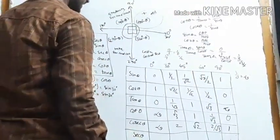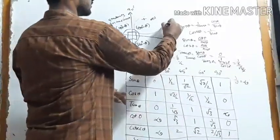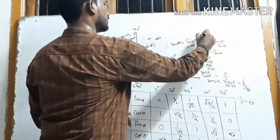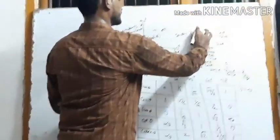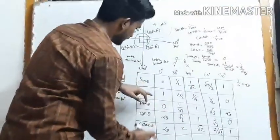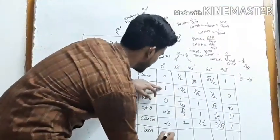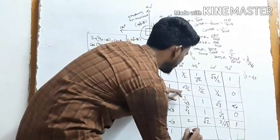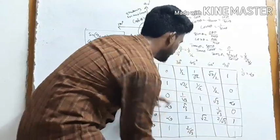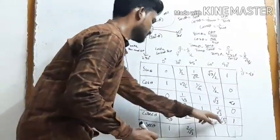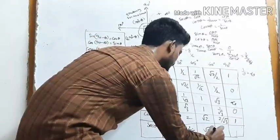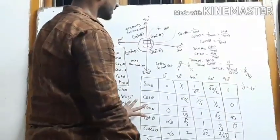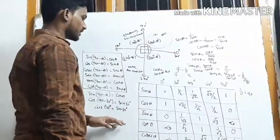Secant theta equals 1 by cos theta. Sec 0° = 1/1 = 1. Sec 30° = 2/√3. Sec 45° = √2. Sec 60° = 2. Sec 90° = infinite. This is the main standard values table for trigonometry.